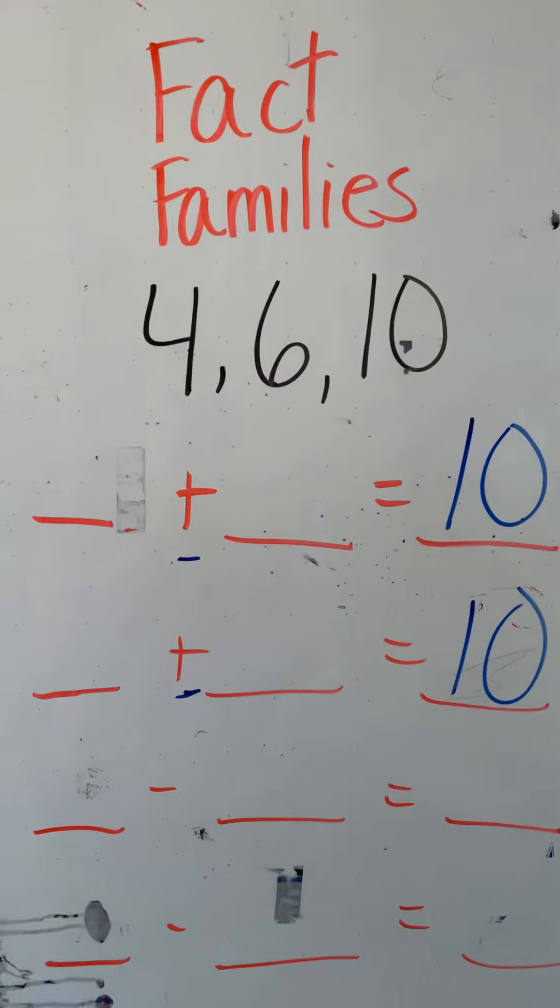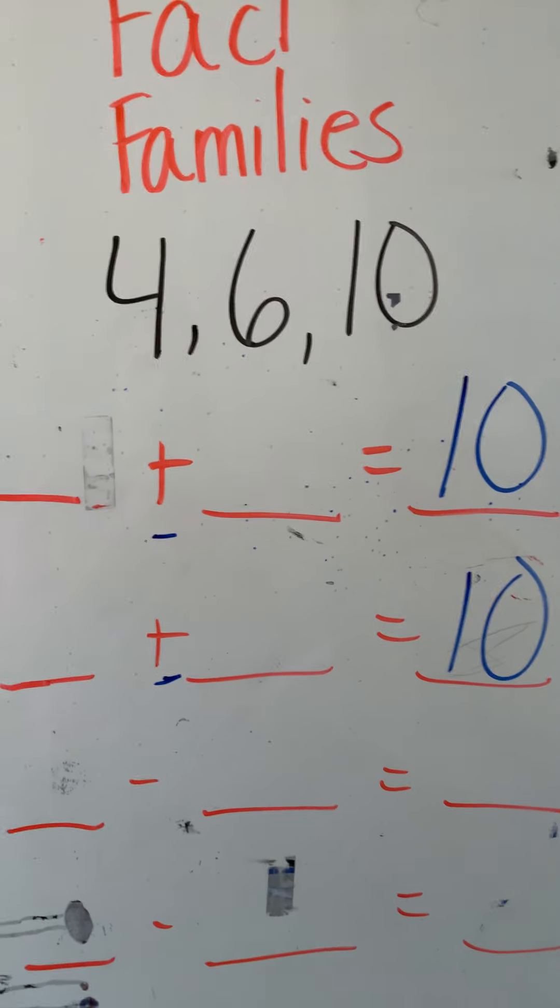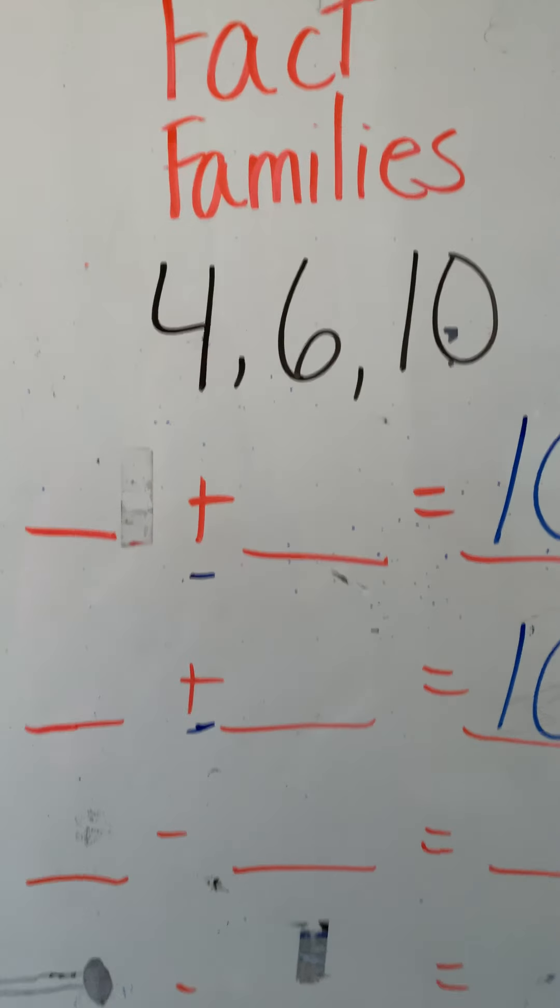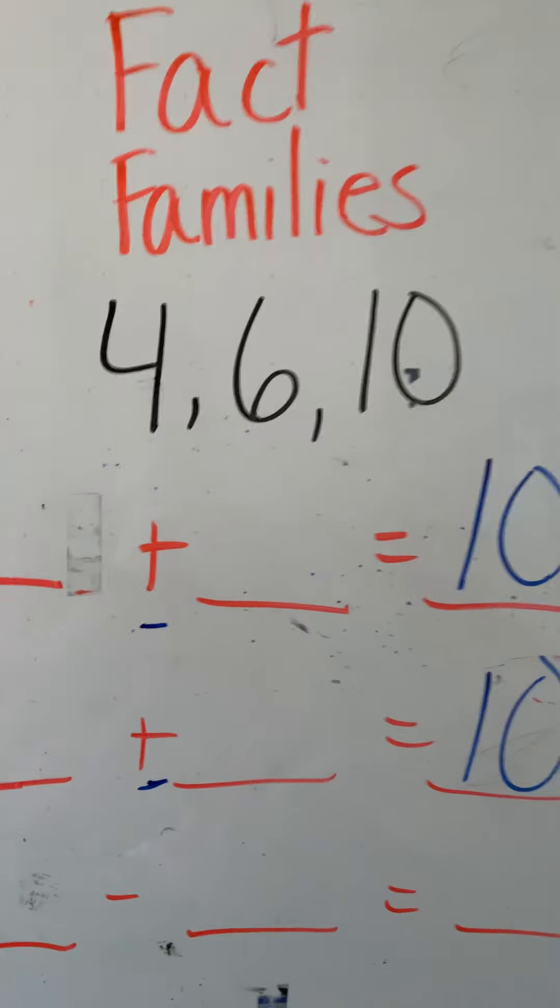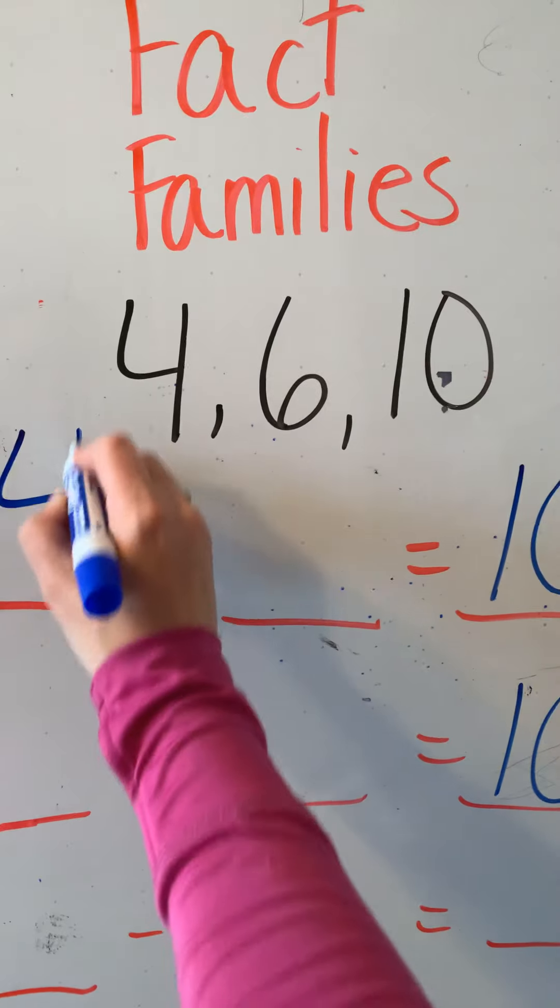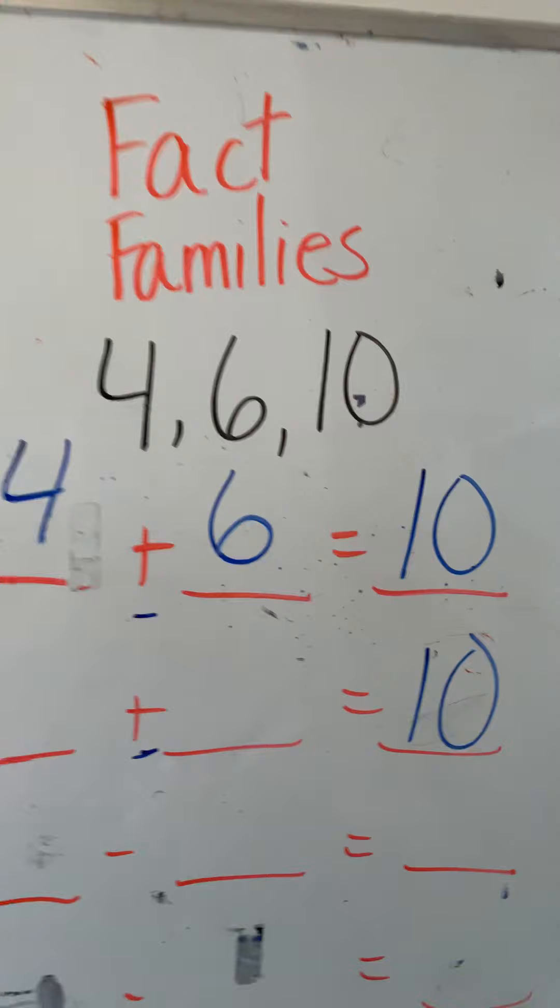We know addition has to end with the biggest number. And then all you do, Noah, what do you do? I hear you saying, just use the other two numbers. You're right. So I can put a 4 plus 6 is 10. And then, Bristol, what am I going to do next?